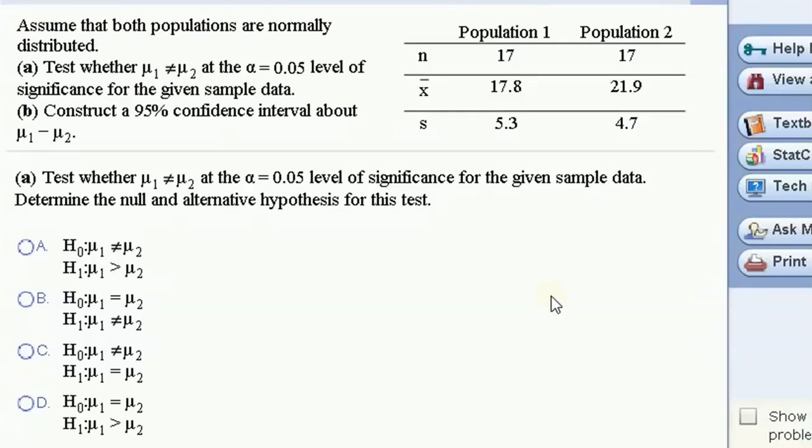We've got some summary data from some survey. We want to test whether mu1 does not equal mu2. So the null hypothesis is always that, at least for this course, that the two have the same mean, mu1 equals mu2. And the alternative is given to us. Test whether mu1, the thing we're testing is what we put in the alternative.